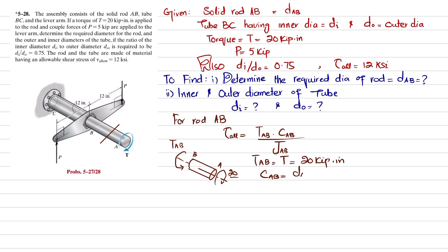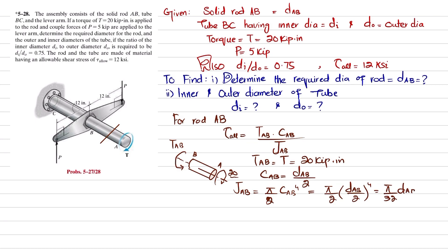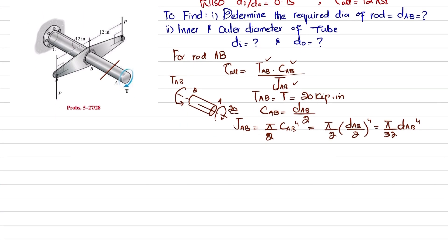c_AB is the radius of rod AB, equal to d_AB divided by 2. J_AB for this solid shaft is equal to (π/2)·c_AB⁴, which equals (π/2)·(d_AB/2)⁴, which simplifies to (π/32)·d_AB⁴.